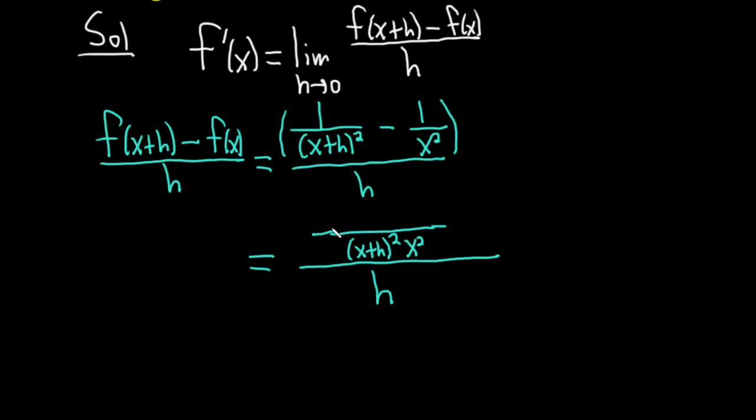And then I ask myself, okay, what goes here? Well, it's 1 times, and then what's missing here to get the LCD? Well, you're missing an x², so times x². Minus 1 times, and then what's missing here to get the LCD? Well, you're missing (x+h)². So (x+h)². This is the fastest way I think you can do it.